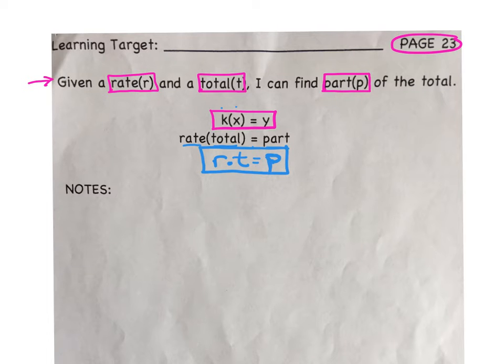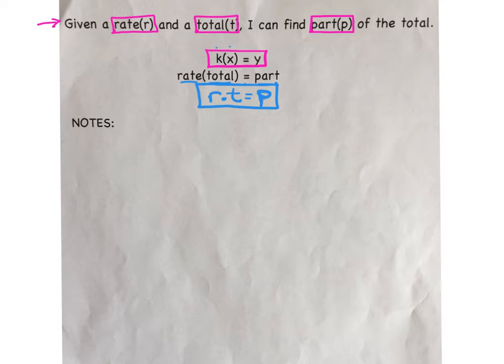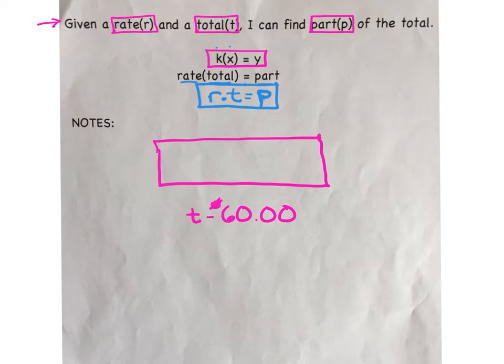And we're going to be using a tape diagram. Let's go shopping and use this formula to calculate a sale price and a savings. Let's begin. Let's say we're going shopping and we come across a jacket that originally costs $60.